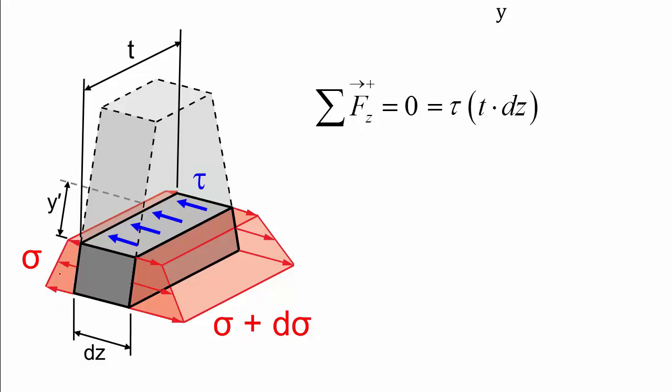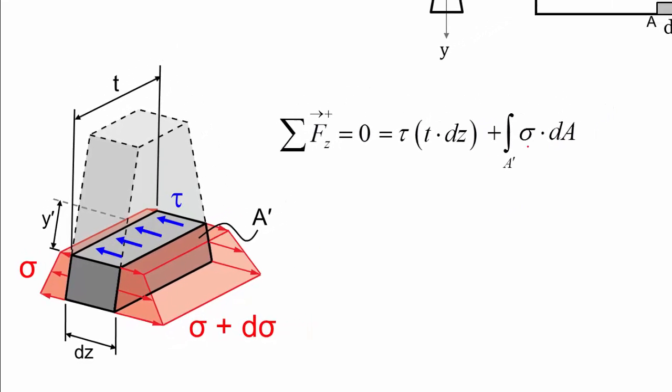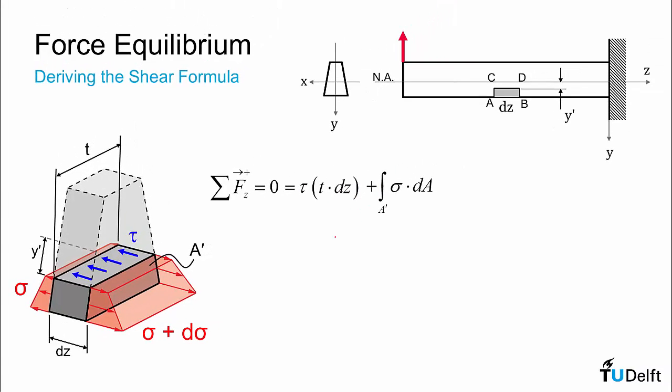Acting in the same direction is our normal stress on our left face. So we need to define the area that that acts on, which I will call A prime, and it is on the opposite face of the beam, this cross-sectional area. And what we need to do is integrate our normal stress distribution sigma times a differential area element dA over the domain A prime. Now those are acting in the direction to the left.